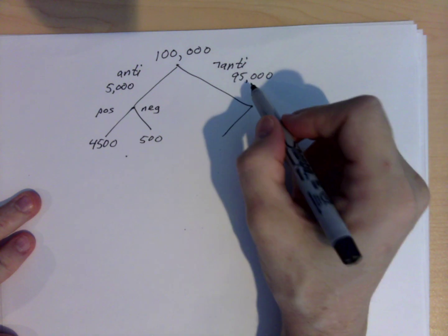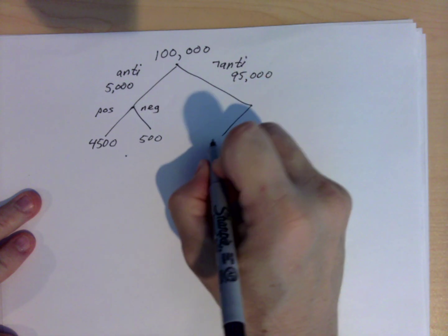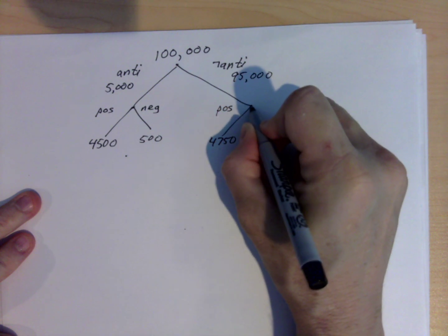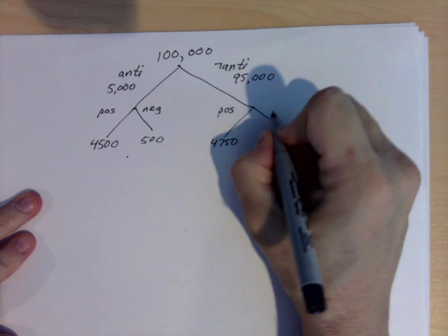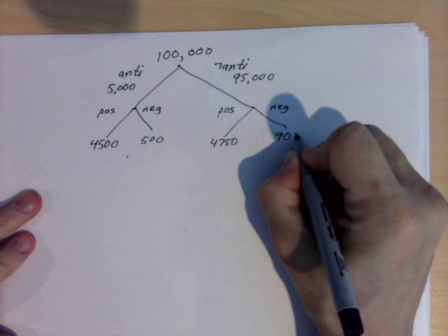And then we said of the 95,000 that don't have antibodies, 5% will still test positive. So that's 4,750. And 95% of those will test negative, and so that's 90,250.